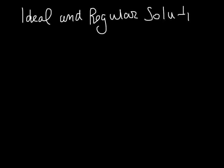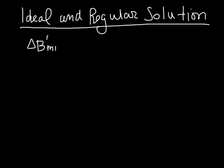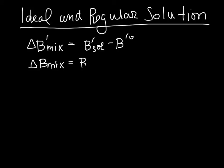Let's talk about ideal and regular solution models for mixing. These are models which will result in an expression for delta G of mixing, from which we can get one step closer to predicting the phase diagram for a binary system. On a per mole basis, delta G of mixing is G of the solution minus G of the reference state. We will start with an ideal solution.